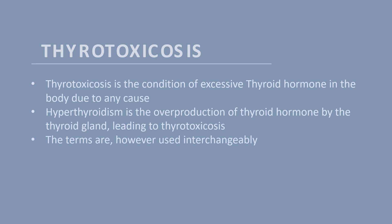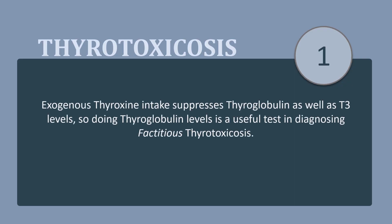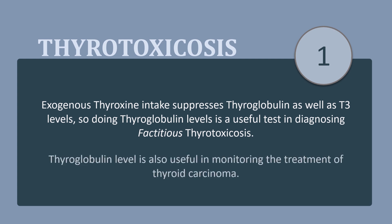Pearl 1: Exogenous thyroxin intake suppresses thyroglobulin, so measuring thyroglobulin levels is a useful test in diagnosing factitious thyrotoxicosis. Thyroglobulin levels are also useful in monitoring the treatment of thyroid carcinoma.